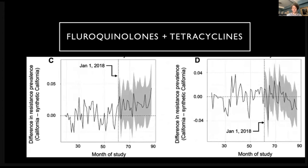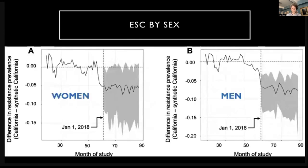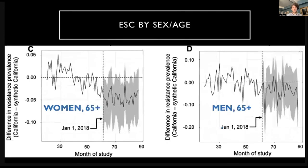Looking at stratified models by sex and age, focusing on extended-spectrum cephalosporins where we may be seeing a signal: UTIs primarily in people under 65 occur in women — maybe 90% of those under 65. We're seeing something pretty similar for men and women — a reduction in resistance for both. For men, it appears potentially more driven by younger men, although these are wide confidence intervals because there aren't many men under 65 with UTI.